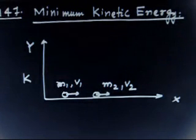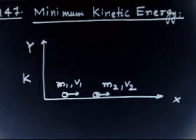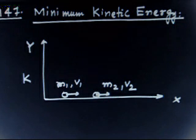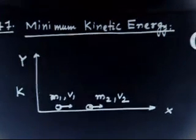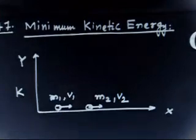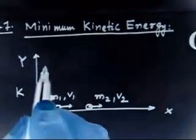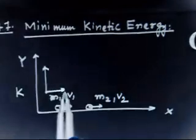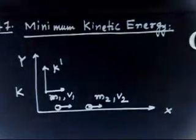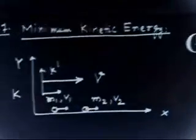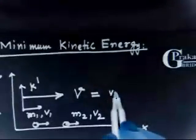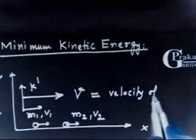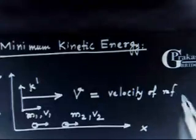The particles move along the positive direction of the x-axis. We need to find the velocity V of another reference frame, called K'. So there is a second reference frame K', and we have to find the velocity V with which K' is moving.